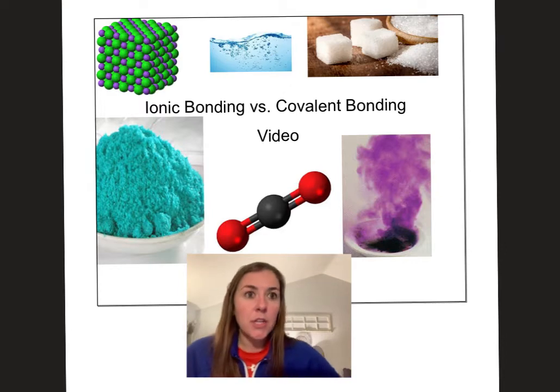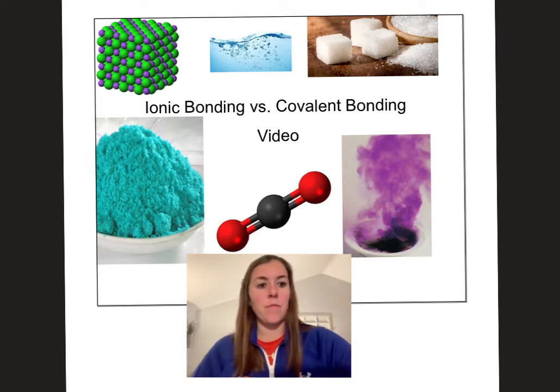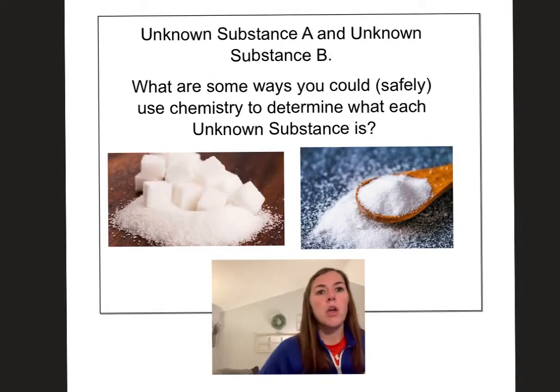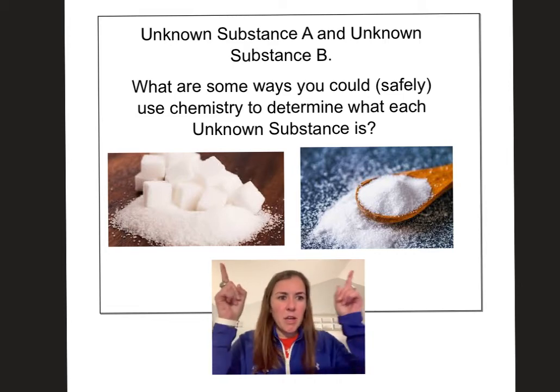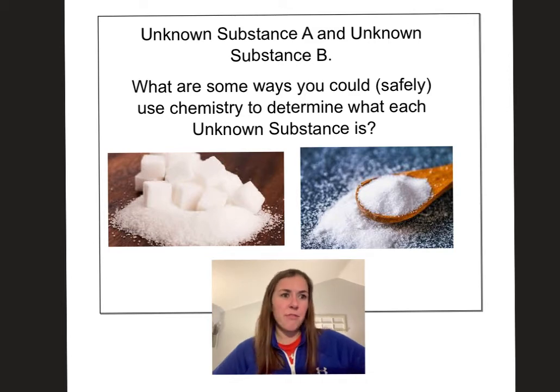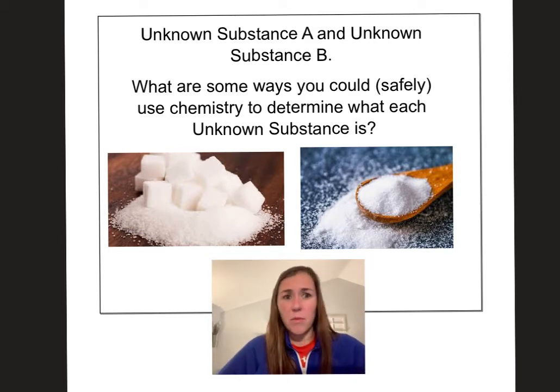I'm here to kick off our bonding unit with a video on ionic bonding versus covalent bonding. So I want to start off with a question. Let's say I have two substances, both white, both kind of crystal-like. I got one here, one here. They are not the same substance. What are some ways I could safely use chemistry to figure out what they are? What makes them different? What makes them similar? How can I identify which one's which?